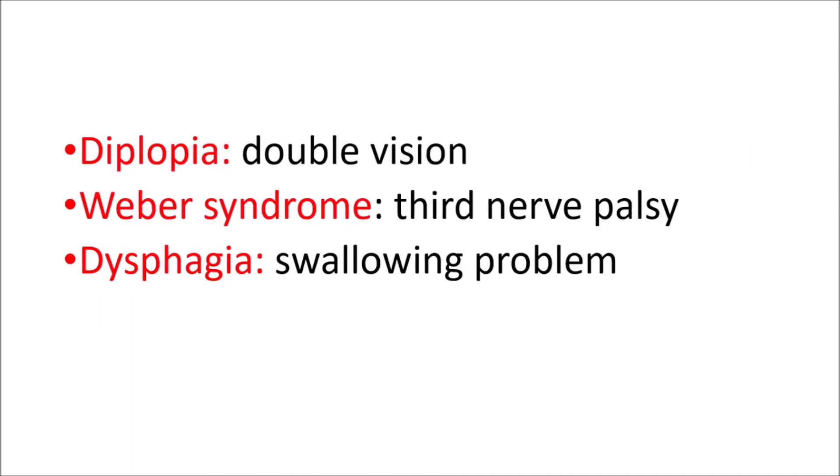Next is diplopia, which is double vision. In stroke patients, different eye conditions develop depending on which artery is blocked. In MCA and ACA, different conditions develop. But in PCA, what occurs is double vision — the person sees everything double. This most commonly occurs with an ischemic stroke, including transient ischemic stroke. In ischemic stroke, the chances of developing double vision increase, as the nerves involving the eye are affected, leading to diplopia.